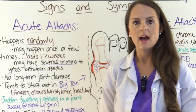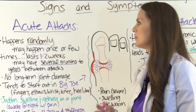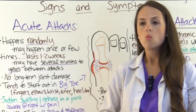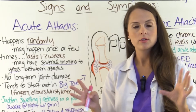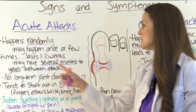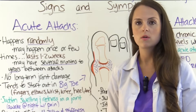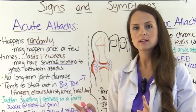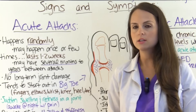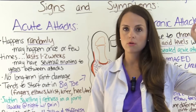Now let's look at the signs and symptoms of gout — both acute gout attacks and chronic attacks. Acute gout attacks tend to happen randomly. The patient may have a one-time attack in their whole lifetime, or they may have a few scattered attacks. They tend to last about one to two weeks, and between attacks they usually go several months or even years. Because it's acute, it tends not to cause long-term joint damage as compared to the chronic gout attacks.